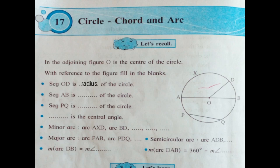Segment AB is ___ of the circle. Segment AB is diameter of the circle.